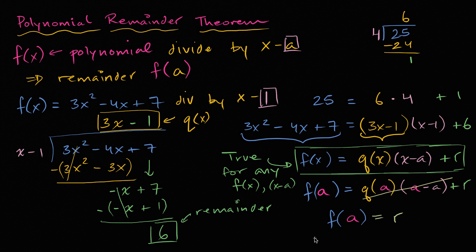So f of a is going to be equal to r. And so you're done. This is the proof of the polynomial remainder theorem. Any function, if when you divide it by x minus a, you get the quotient q of x and the remainder r, it can then be written in this way. And if it's written in this way, and you evaluate it at f of a, and you put the a over here, you're going to see that f of a is going to be whatever that remainder was.